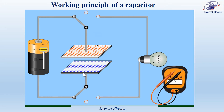This phenomenon is called the charging of the capacitor. Electric equilibrium is obtained when there is no transfer of electrons between the battery and the capacitor. Since we have an accumulation of charges on the two plates, a potential difference is created between these two plates.